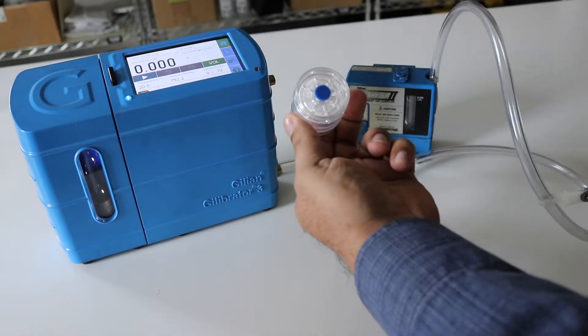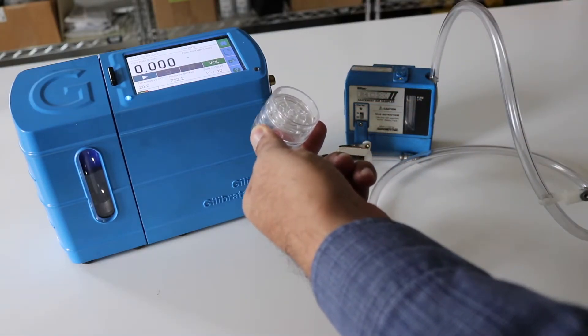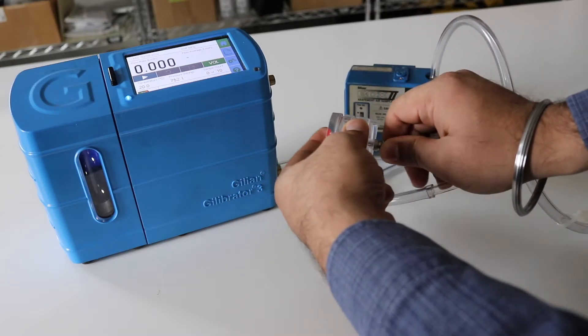Take the cassette and connect the flexible tube of the sampling pump to the outlet side of the cassette. The outlet is always the filter side of the cassette.